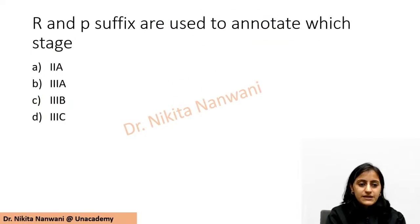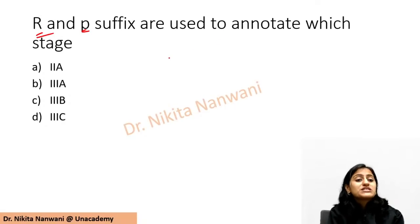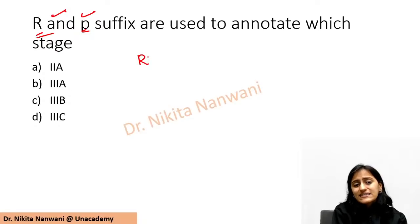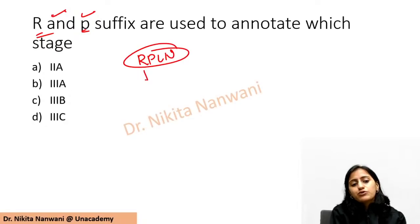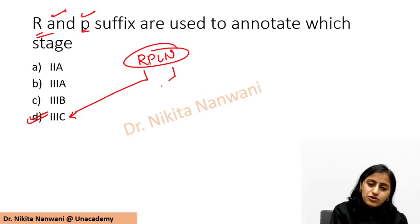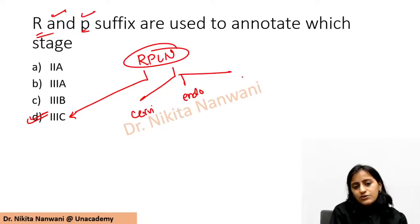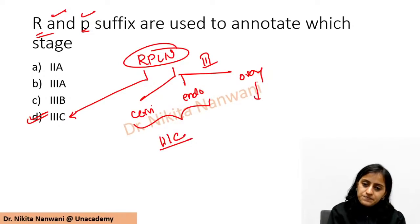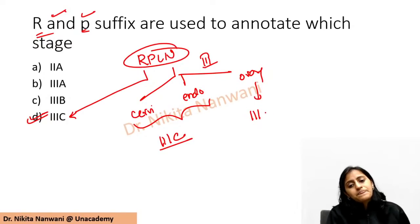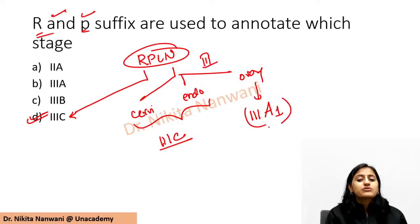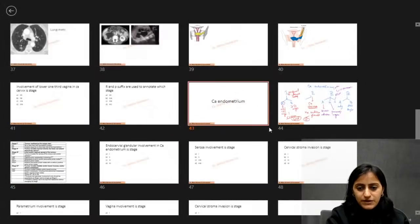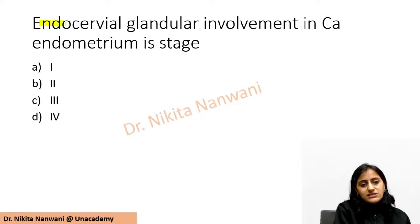The R and P suffixes in ca cervix staging are used to annotate stage 3C - indicating whether retroperitoneal lymph nodes were detected radiologically (R) or by pathology (P). Retroperitoneal lymph node involvement is stage 3 for all pelvic gynecologic cancers: in ca cervix and ca endometrium it is stage 3C; in ca ovary it is stage 3A1.